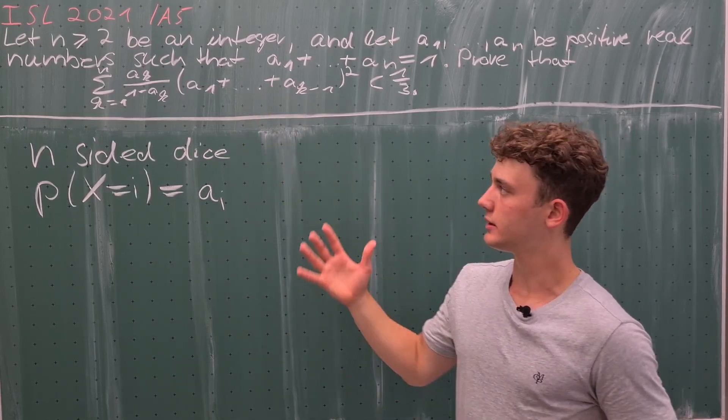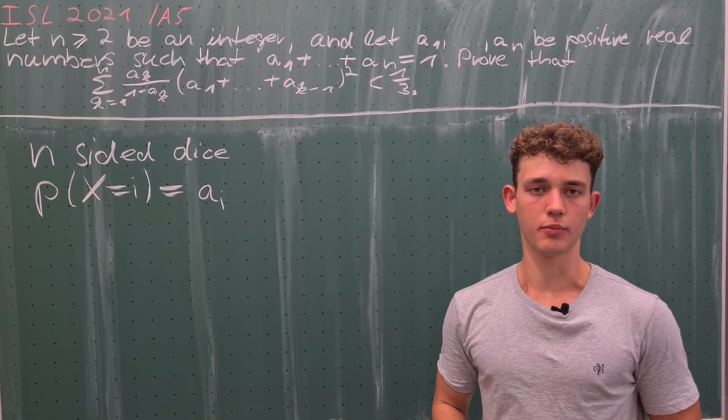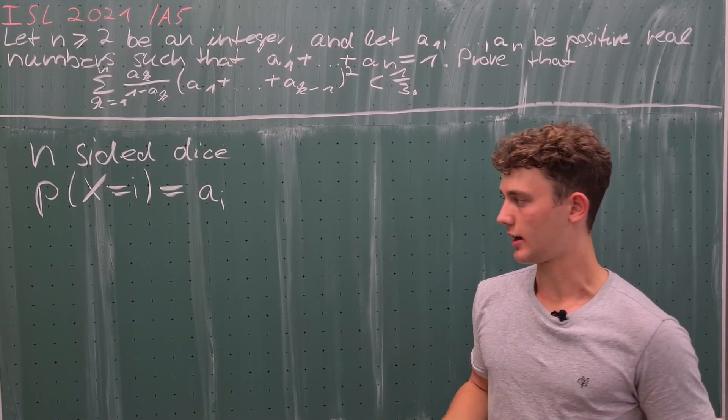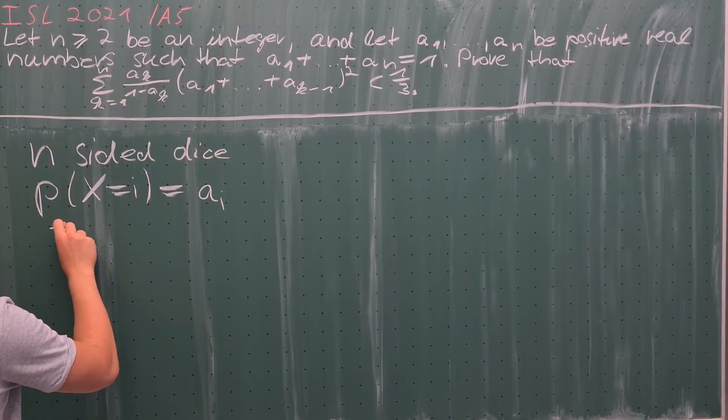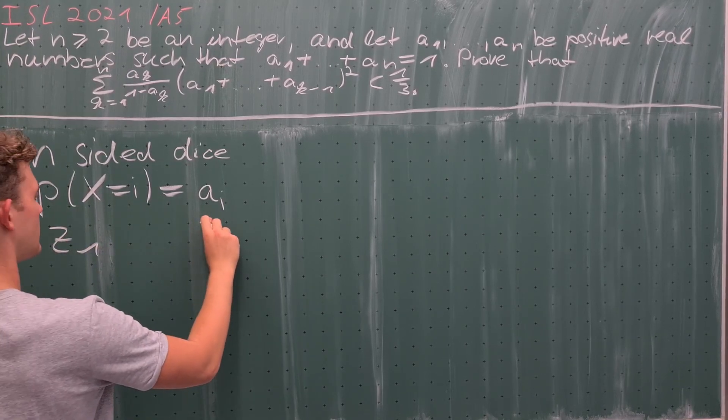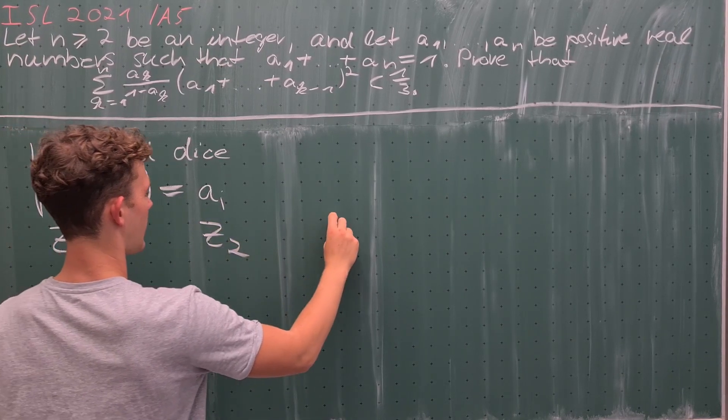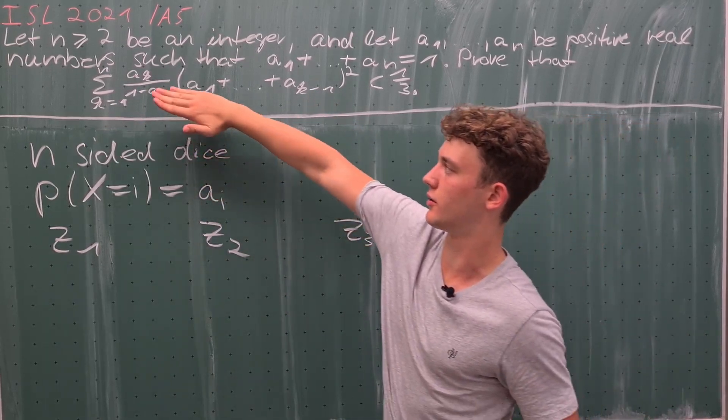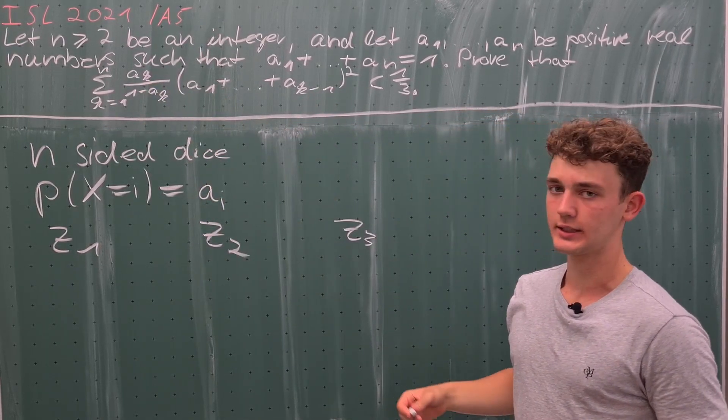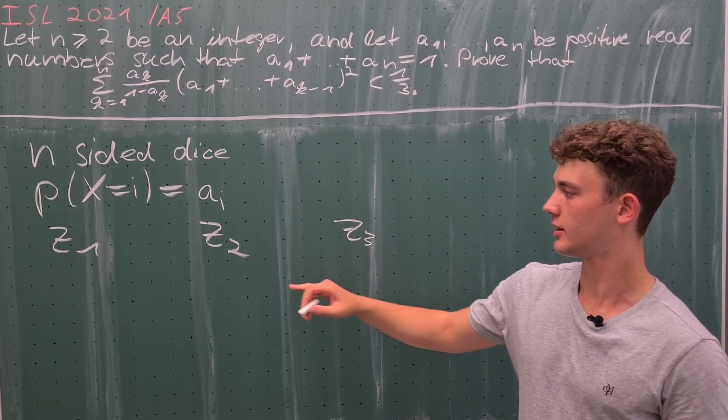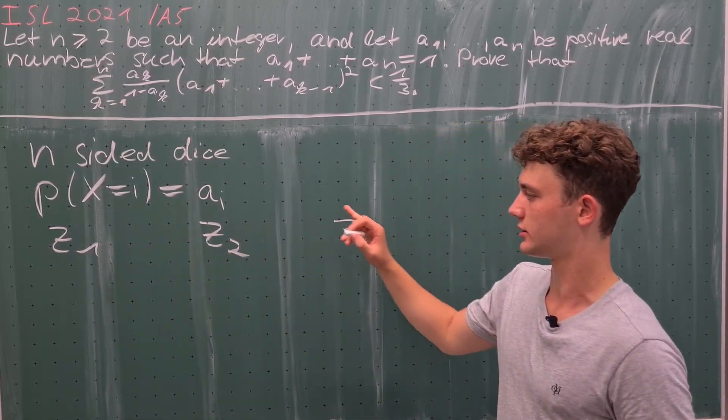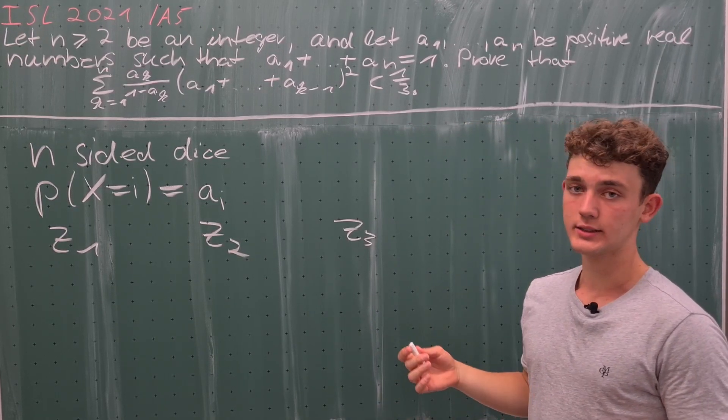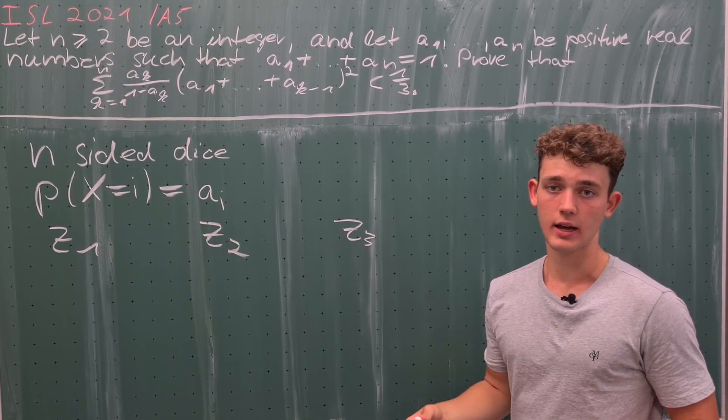Therefore, if we just ignore this term in the denominator and sum all of these numbers up, this entire quantity is the probability of rolling this dice three times and getting numbers z_1, z_2, and z_3. And then this quantity, if we ignore the denominator, is exactly the probability that z_1 would be the largest of these three numbers, which is in turn less than one third.